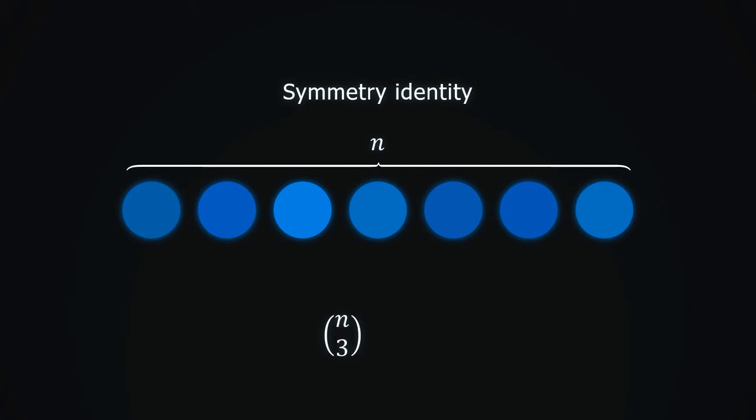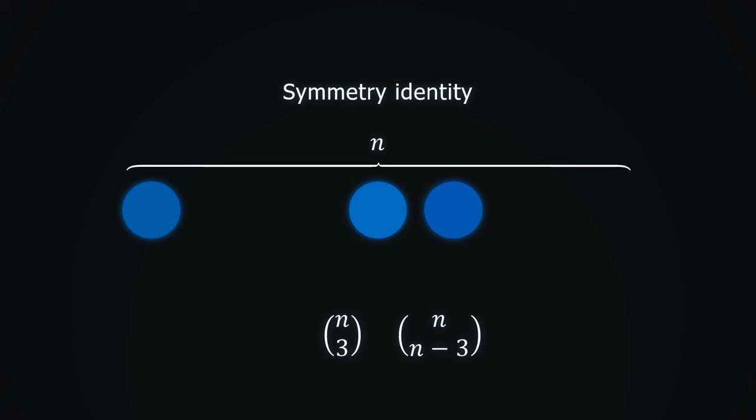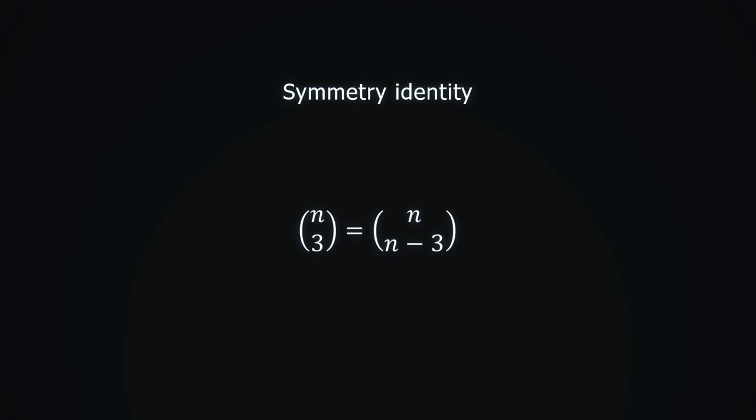Also, instead of choosing the objects we want to take, we can also choose the ones we don't want, and then remove them. There are n choose n minus 3 ways to do this, but since we are counting the same quantity in 2 ways, these two numbers are equal. That is, n choose 3 equals n choose n minus 3.